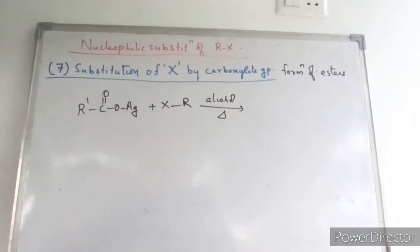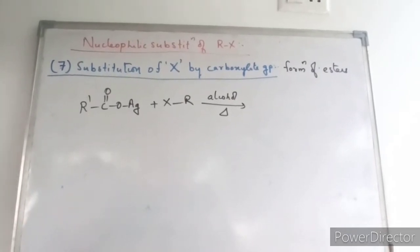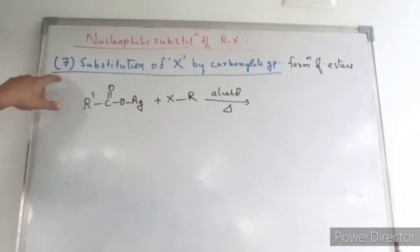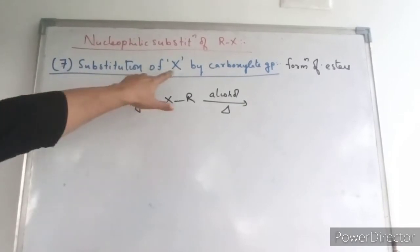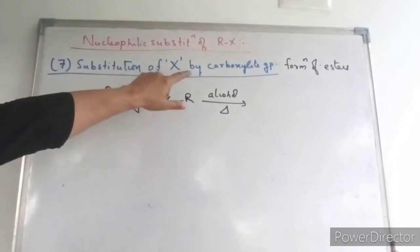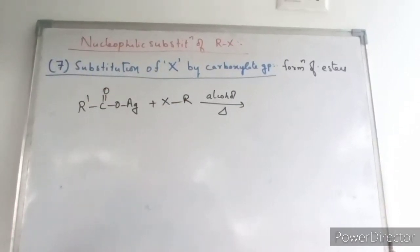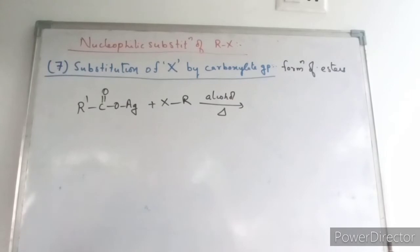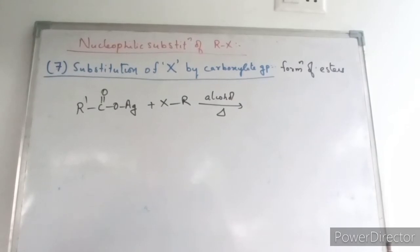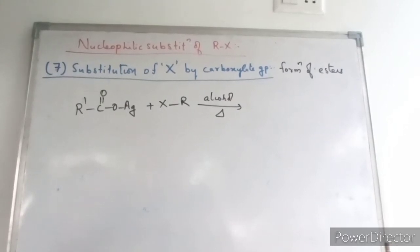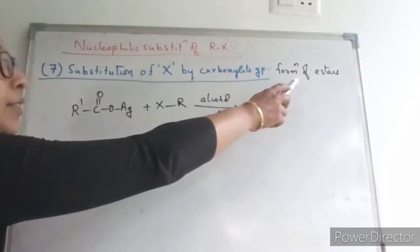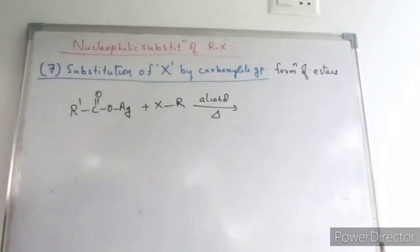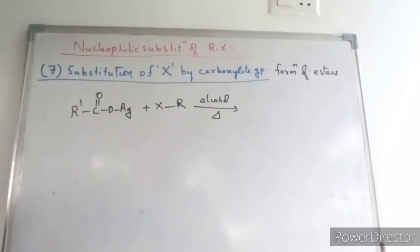We are continuing those substitution reactions. The 7th reaction is substitution of halogen by carboxylate group. If you are substituting halogen by carboxylate group, you will be getting esters — R-COO-R' in that manner.